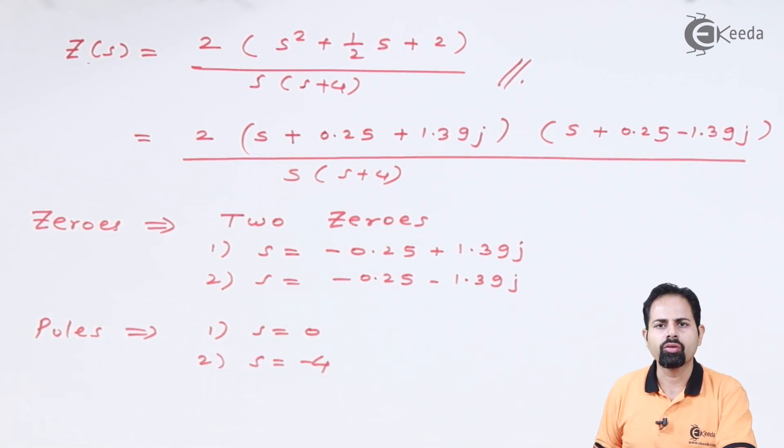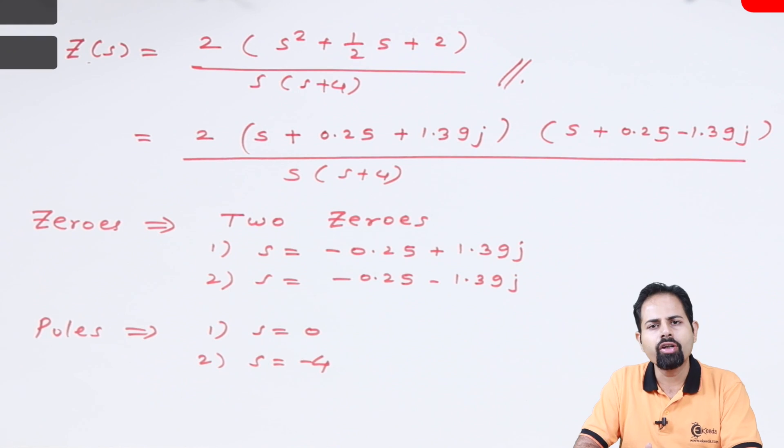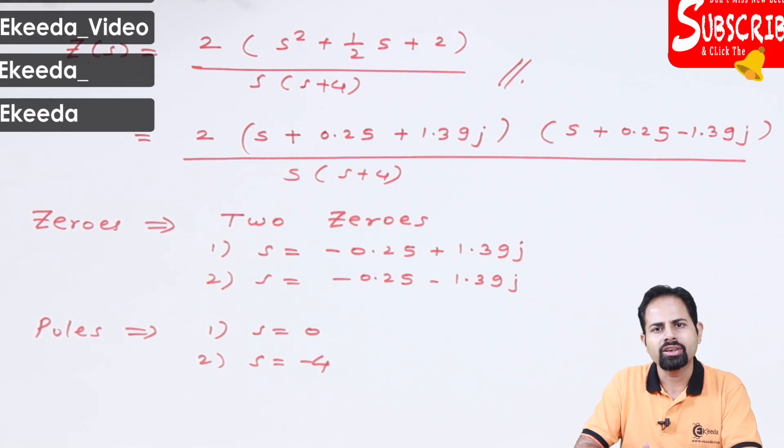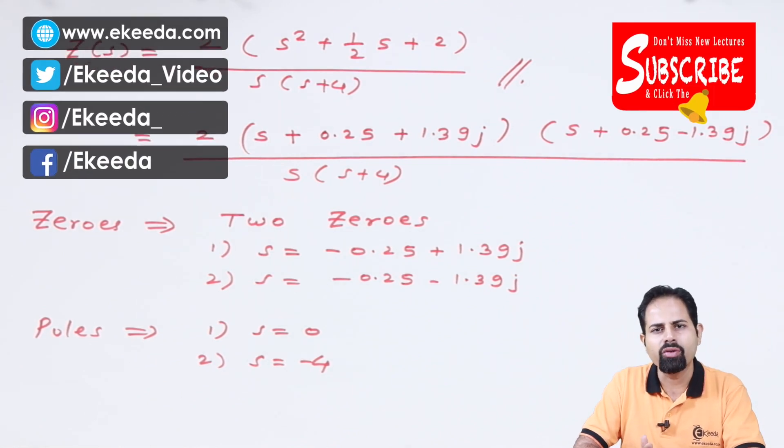And second one is s = -4. So we wanted to get poles and zeros, and we have achieved it. That is the end of this problem. Thank you very much for watching this video. Stay tuned to ikeda and please subscribe.